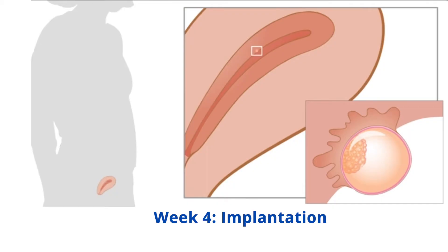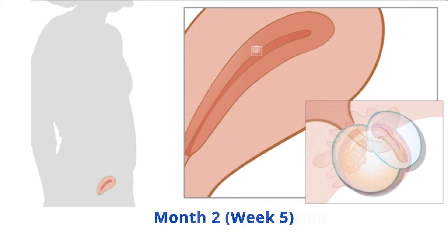Week 4 - Implantation: approximately 6 to 10 days after fertilization, the embryo implants into the lining of the uterus. Special networks of blood vessels form between the embryo and the walls of the uterus, allowing the embryo to receive nutrients from the mother's blood.